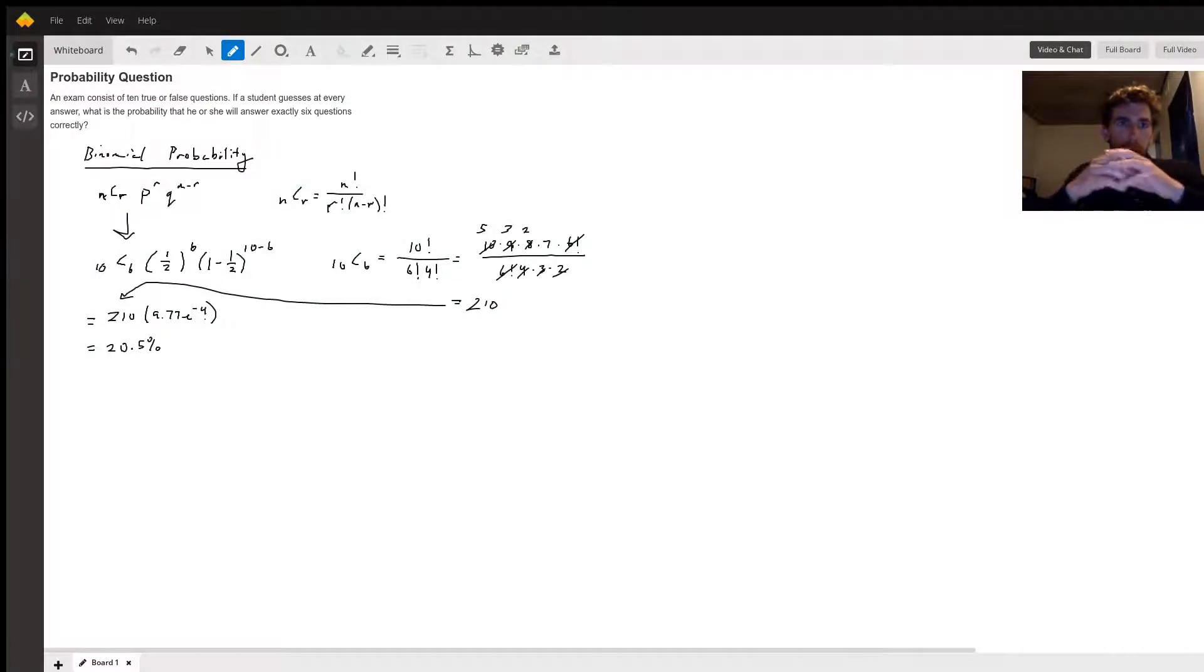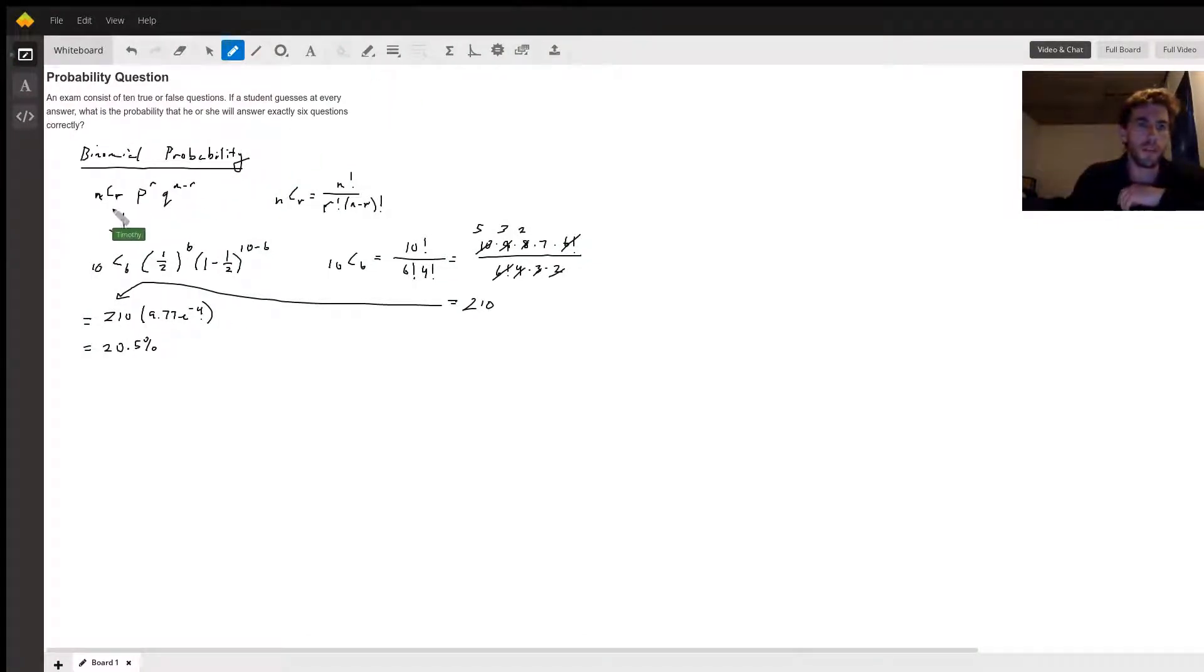With binomial probability theorem, this is the main formula we'll be using. NCR is the combination formula. P is the probability of success, Q is the probability of failure. The N terms are going to be the total number of questions you have.